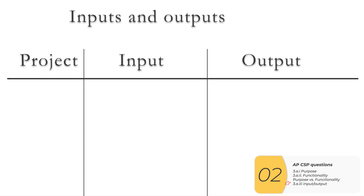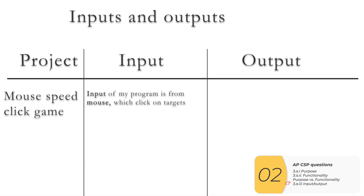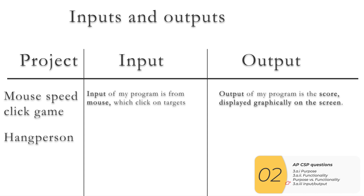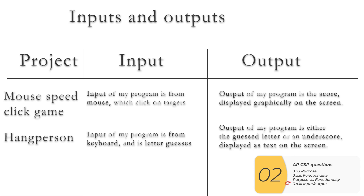Here are some examples. I recommend following a formula: how is that input or output coming, and what is it? In the mouse speed click game, the input is from a mouse — that's how — and what is it? We're clicking on targets. The output is the score, displayed graphically on screen. In a hang-person game, the input is from the keyboard — that's how — and what is it? Letter guesses. The output will be either the guessed letter or an underscore, displayed as text on screen.